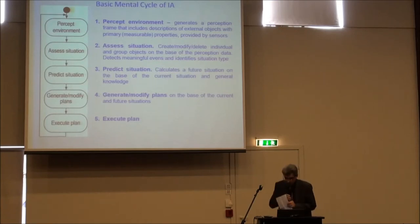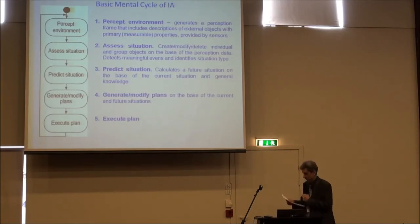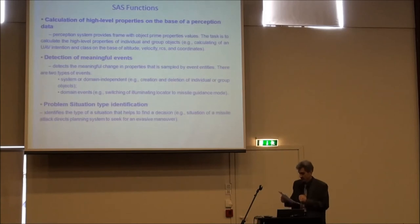The basic mental model is presented on this slide. It consists of five functions: environment perception, situation assessment, prediction, planning, and planning execution. Generally speaking, SESS is intended for interpretation of current situation based on low-level sensory data. Its main functions are calculation of high-level attributes of particular external objects and situation as a whole, detection of meaningful events such as appearance of new objects that can influence current agent plan or state changes of existing ones that are essential for achieving goals, and identification of problem-situation type that is used as context for planning subsystems.